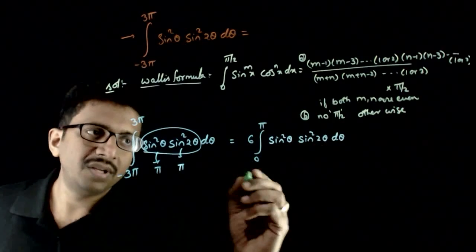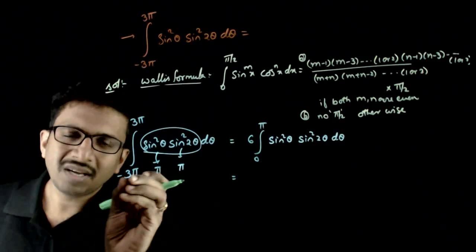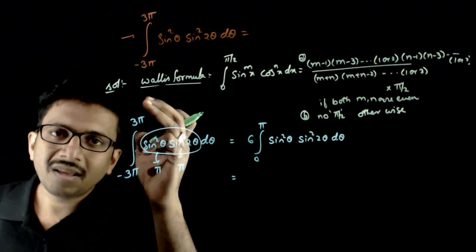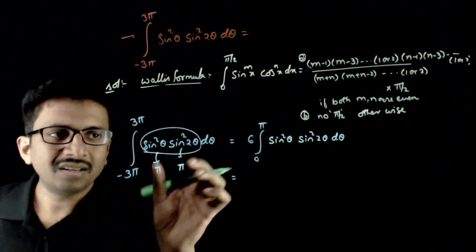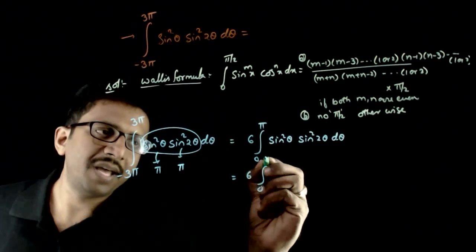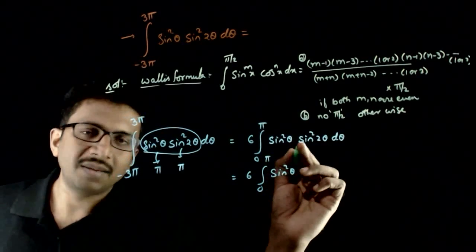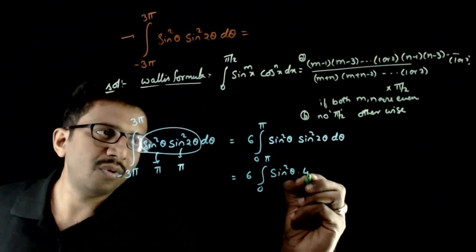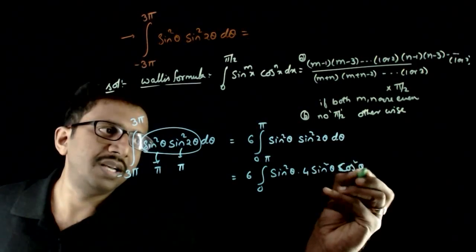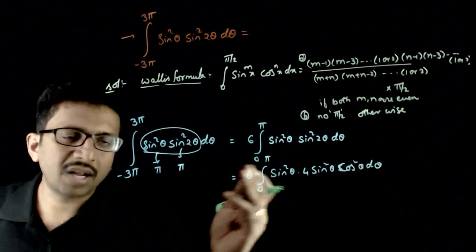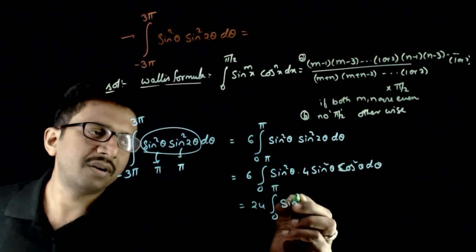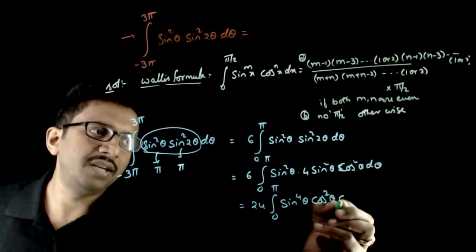Now, what is sine square two theta? Using the formula that integration from m times period to n times period equals n minus m times the integral over one period, we get six times the integral from zero to pi. Sine square two theta equals four times sine square theta into cosine square theta, so this becomes twenty-four times the integration from zero to pi of sine power four theta into cosine square theta d theta.